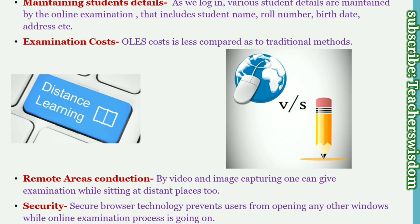Other characteristics include maintaining student detail, examination cost, remote area conduction, and secure browser. Maintaining student detail means that as students log in, various details are maintained by the online examination system, including student name, roll number, birth date, address, etc. There is no need to type all these things again and again; data is saved permanently. Online examination cost is less compared to the traditional method.